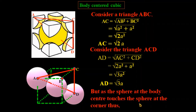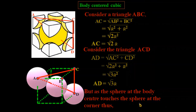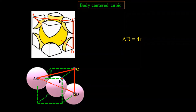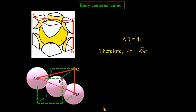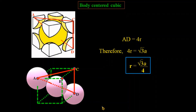Since the sphere at the body center touches the sphere at the corner, the body diagonal passes through: r + 2r + r = 4r. So AD = 4r. Therefore 4r = √3·a, and r = (√3·a) / 4. This is the relation between the radius of the sphere and the lattice constant a for the body-centered cubic unit cell. Here we have found the relation between r and a for all three cubic systems.